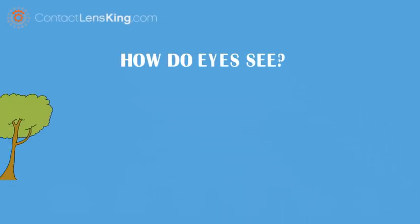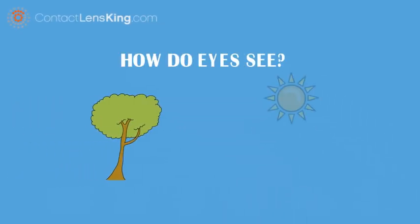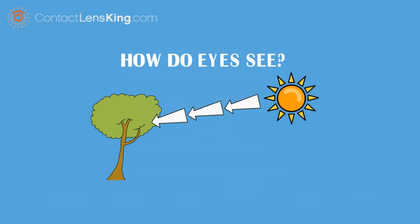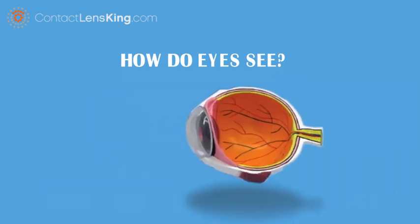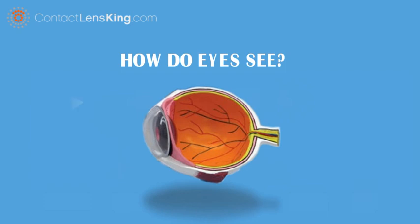How do eyes see? Vision is the ability to process light bouncing off of things. When the light reaches our eyes, it first hits our cornea, the transparent part of our eye and the primary refractive surface.